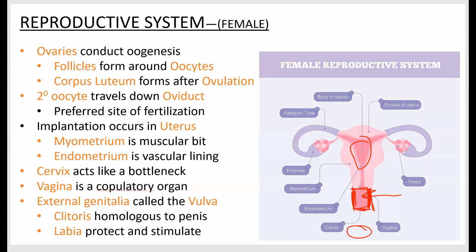The external genitalia of a female is often incorrectly called the vagina — the correct term is vulva. It consists of the labia, which are sensory and protective, and the clitoris, which is homologous to the penis — it comes from the same embryonic parts — and is erectile with lots of nerve endings.